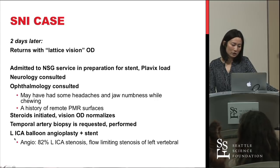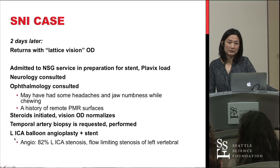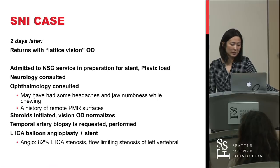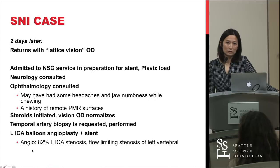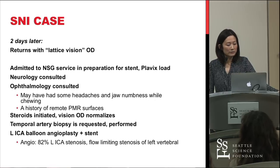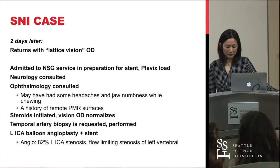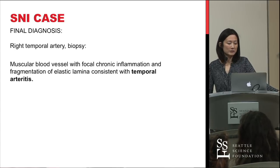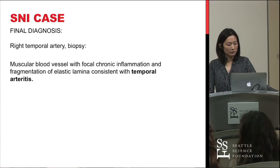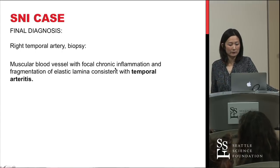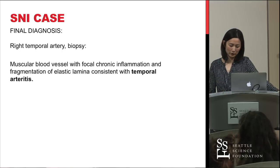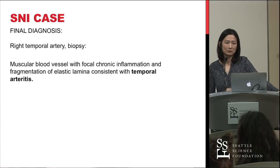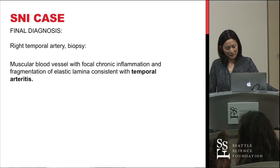A few days later he also had balloon angioplasty of the left internal carotid artery with stent placement. The conventional angiogram showed left ICA stenosis estimated at 82%, and he also had flow-limiting stenosis of his left vertebral artery. The final pathology of the right temporal artery showed focal inflammation and fragmentation of the elastic lamina, consistent with the diagnosis of temporal arteritis. He is following with Dr. May.